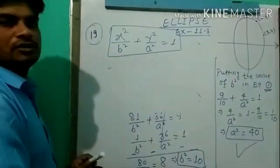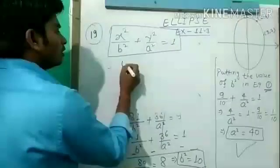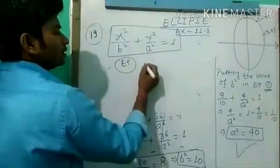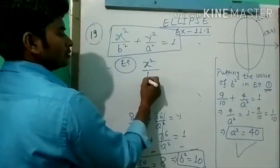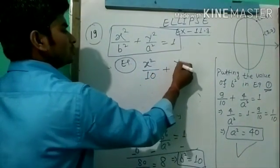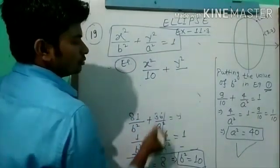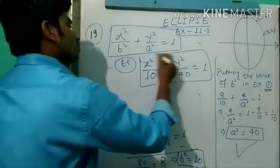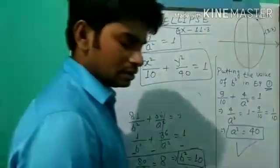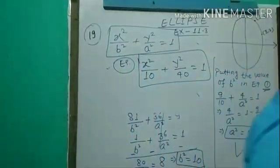Now we can write the equation of the ellipse: x²/b² where b² is 10, plus y²/a² where a² is 40, equals 1. So this is our required equation of the ellipse. This completes question number 19.